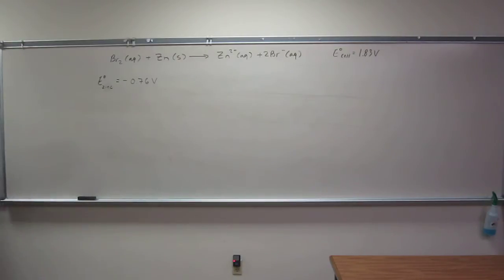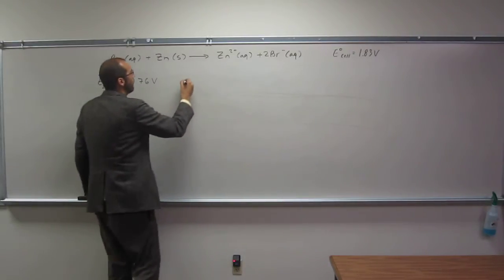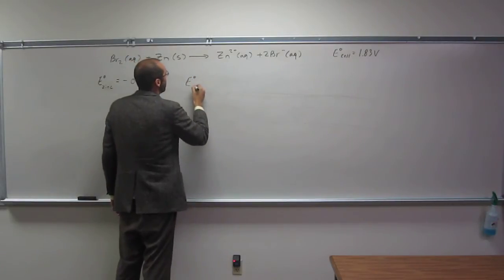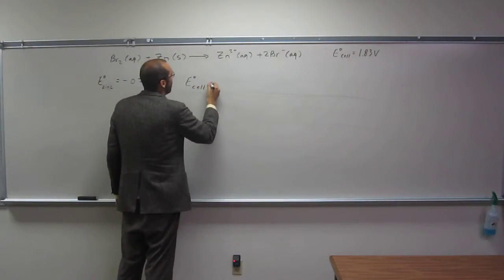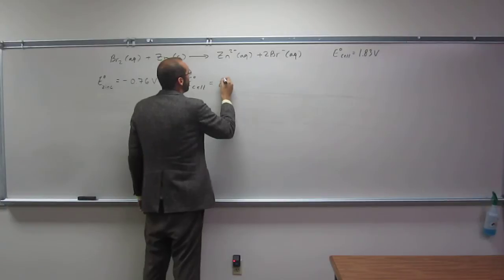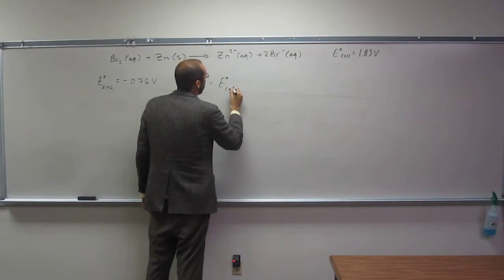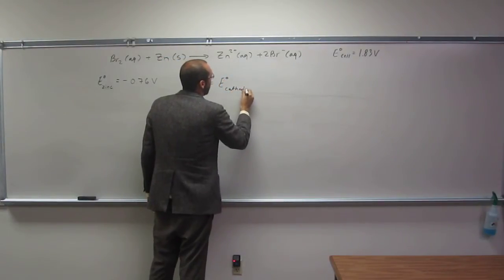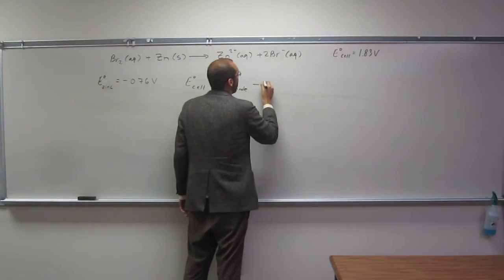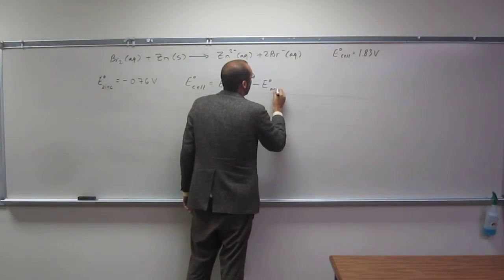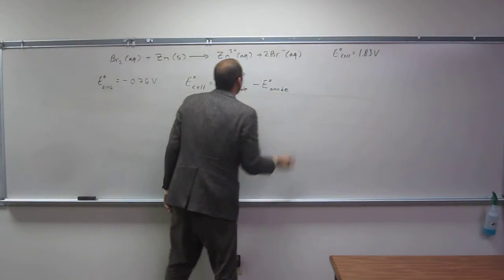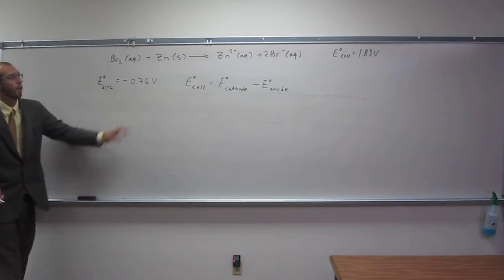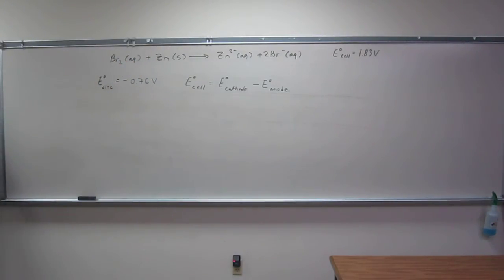So if you recall, the standard potential of the cell equals the standard potential of the cathode minus the standard potential of the anode. So in order to figure out what's what, we need to break this thing into its half reactions.